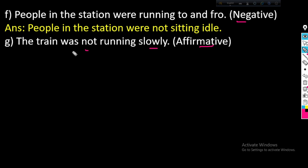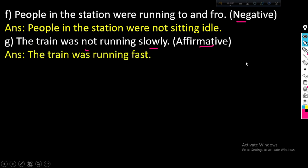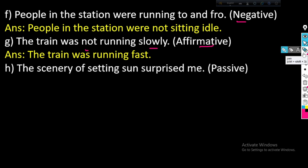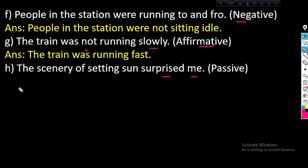The train was running fast. The scenery of the setting sun surprised me. This should be passive. The object is me — this becomes the subject. Surprised is a main verb in past form. The auxiliary is 'was'. I was surprised by the scenery of the setting sun.